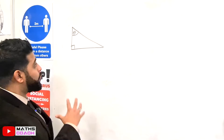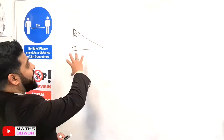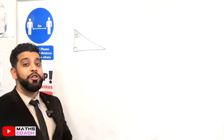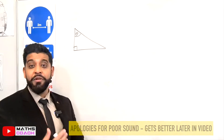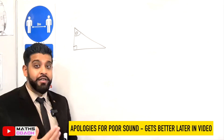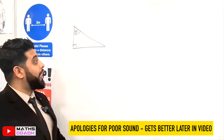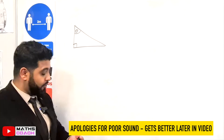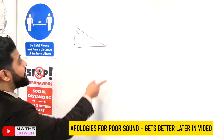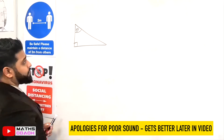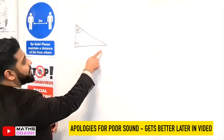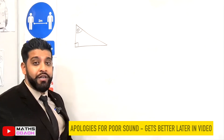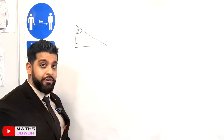Trigonometry deals with right angle triangles and it's when you can't use Pythagoras, so you won't be finding that third side given two sides - you are dealing with sides and also angles as well. Have a look at this triangle: we have a right angle triangle and the sides are labeled differently to what you know from Pythagoras.